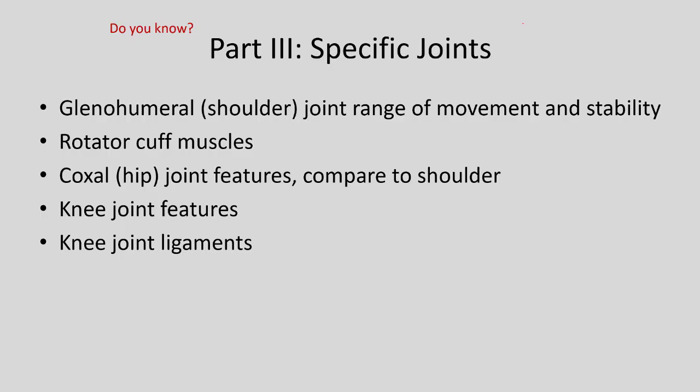What you should know for the specific joints: the glenohumeral joint's range of movements and the factors that increase its stability, including the labrum and ligaments, as well as the rotator cuff muscles — specifically their names and locations. For the hip joint, compare it to the shoulder, understand its supporting ligaments, range of motion, and structural features. You should know the knee joint features and most importantly the ligaments.